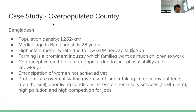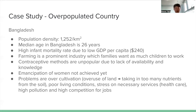The first case study is for an overpopulated country: Bangladesh. As an introduction with place-specific detail, which is crucial in your seven mark questions, Bangladesh has a population density of 1,252 people per square kilometer and a median age of 26, which is very young. Bangladesh is overpopulated because the infant mortality rate is very high due to a bad economy with a low GDP per capita of only $240, which leads to higher birth rates as families want more workforce on farms, with contraceptive methods being unpopular due to lack of ability and knowledge, and emancipation of women not yet achieved. Bangladesh is still in stages one and two, with high birth rate and emancipation not achieved.